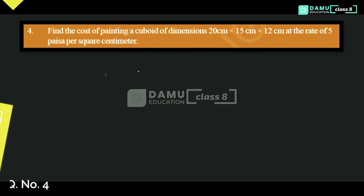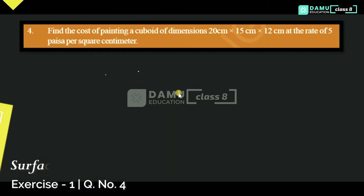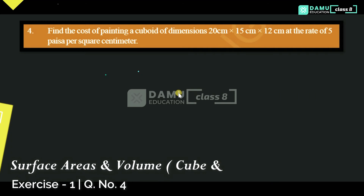Hello viewers, thanks for watching our videos. If not subscribed, please subscribe and click the bell icon. In this module we are going to discuss: find the cost of painting of a cuboid of dimensions 20 centimeter, 15 centimeter, and 12 centimeter at the rate of 5 paisa per square centimeter.